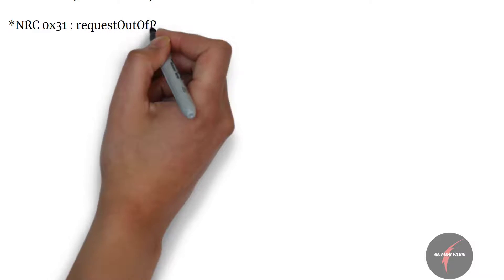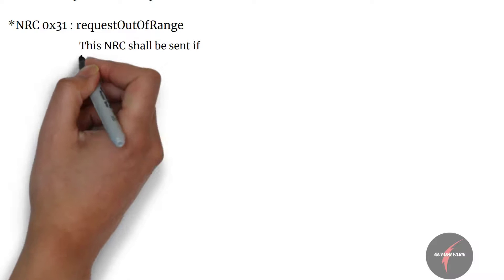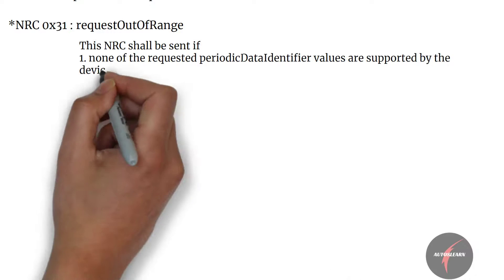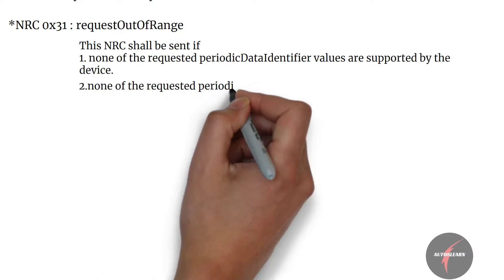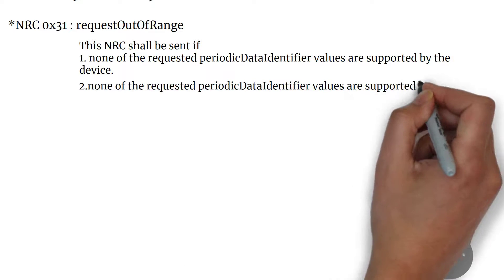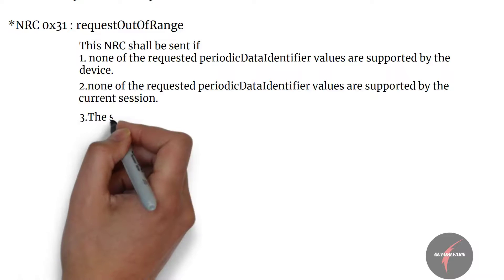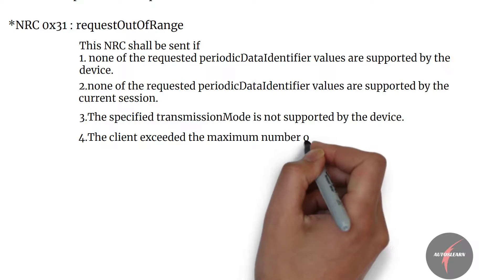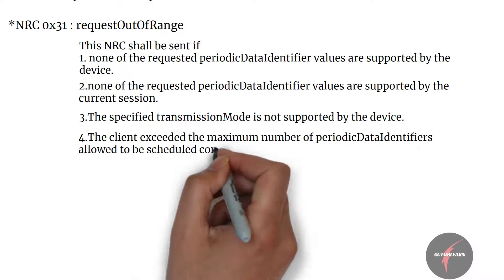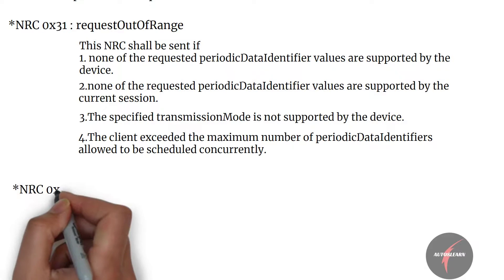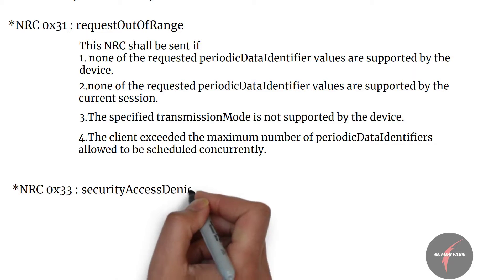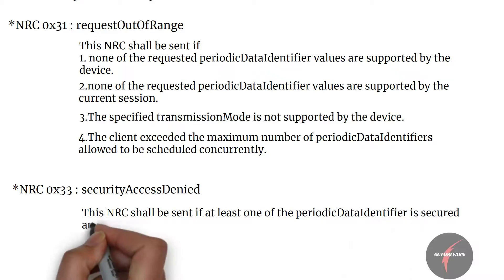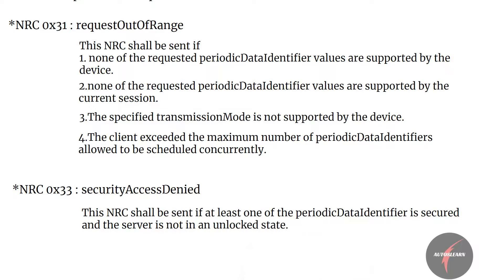NRC 0x31 — request out of range — shall be sent if none of the requested periodic data identifier values are supported by the device, or if none are supported by the current session, or if the specified transmission mode is not supported by the device, or if the client exceeds the maximum number of periodic data identifiers allowed to be scheduled concurrently. NRC 0x33 — security access denied — shall be sent if at least one of the periodic data identifiers is secured and the server is not in an unlocked state.